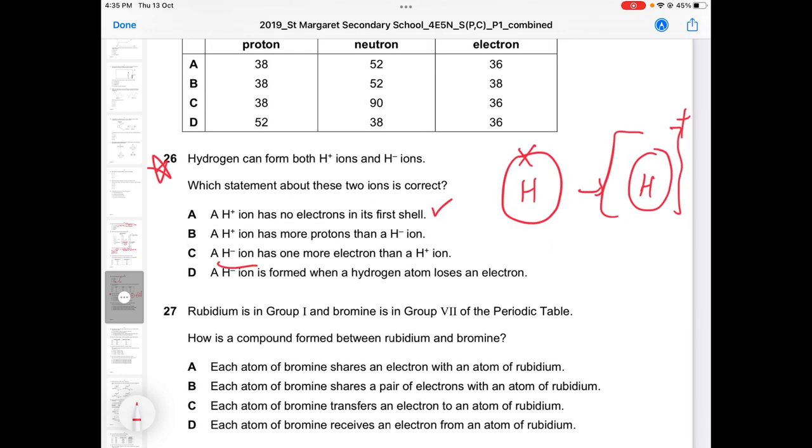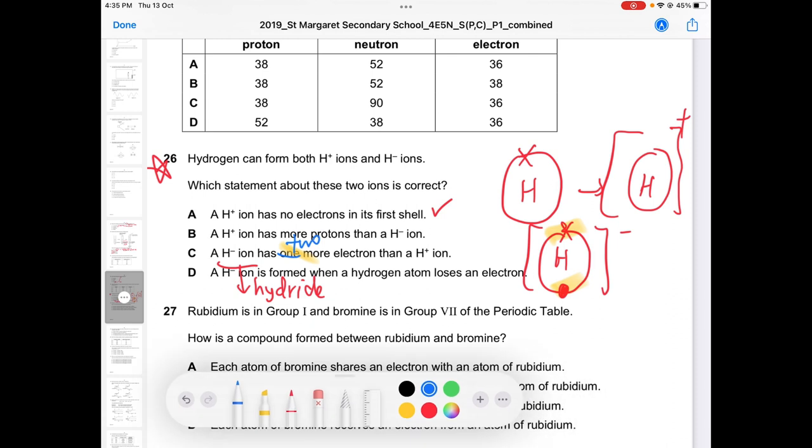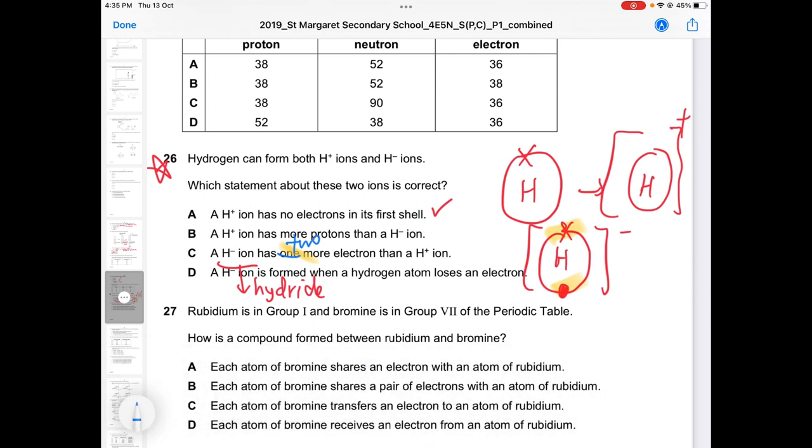However, when you form hydride, you have H minus. You gain an electron. That's why it's negative. So if you compare H minus and H plus, actually it's not just one electron. In fact, this should be two electrons. Two more electrons than a H plus ion.